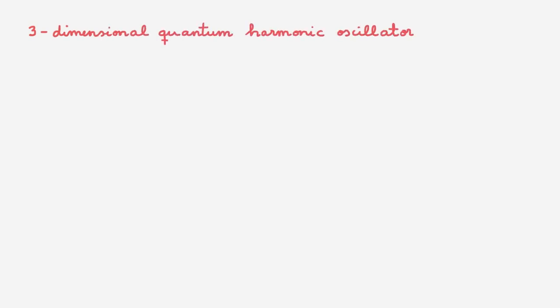Let's consider a particle moving in a three-dimensional quantum harmonic oscillator. We call the state space of a particle moving in three spatial dimensions V, and it's given by the tensor product of the state spaces Vx, Vy and Vz, where Vx is the state space of a particle moving in the x-spatial dimension, and similarly for Vy and Vz. To understand the motion of particles in three spatial dimensions, we need to use the properties of tensor product state spaces, so I recommend checking out those videos first.